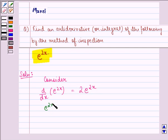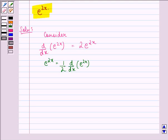So, we can say that e raised to power 2x is equal to 1 by 2 into d by dx of e raised to power 2x. This implies e raised to power 2x is equal to d by dx of 1 by 2 into e raised to power 2x.